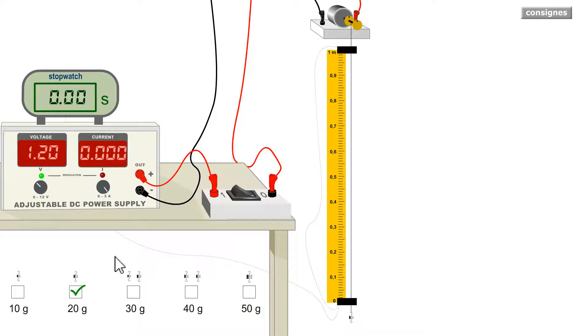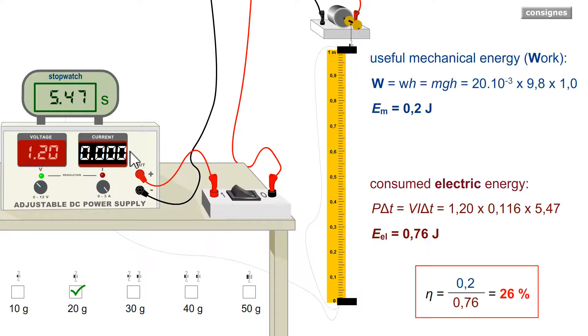I change mass to 20 grams and close. I have a current which is a little higher, 0.116 ampere, 116 milliampere. It's a small motor. I have the same calculation as earlier, which this time gives me 26%, a little better efficiency.